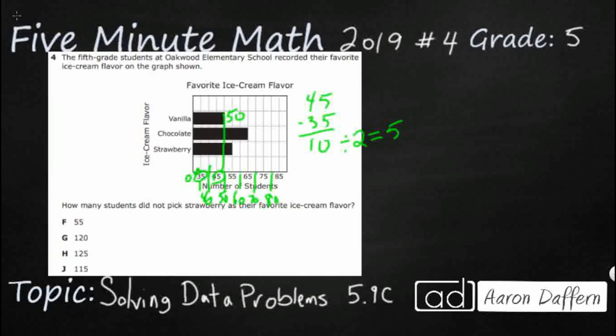Chocolate just goes straight on one of the numbered lines. That's going to be 65. And then strawberry also goes on one of our numbered lines. That is going to be 55. So it's not a very complex graph once you kind of figure out how to find those missing numbers. We've got 50 vanilla, we've got 65 chocolate, we've got 55 strawberry.